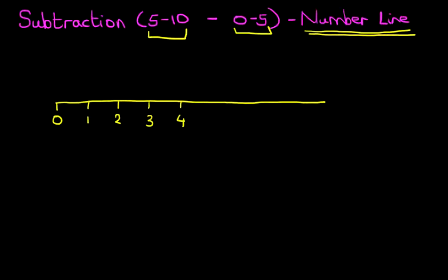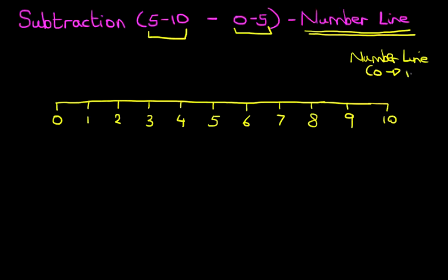Ours is starting at 0. We're going to keep going. 6, 7, 8, 9 and 10. So that is our number line from 0 to 10.